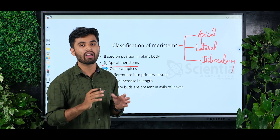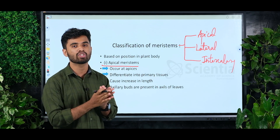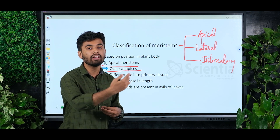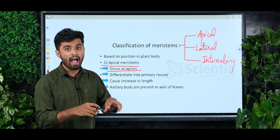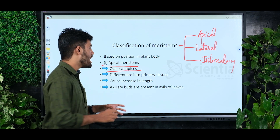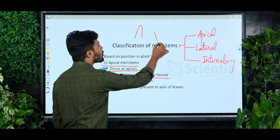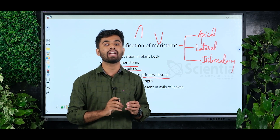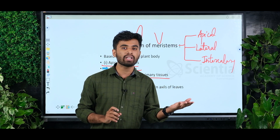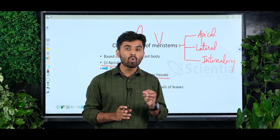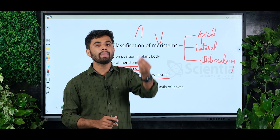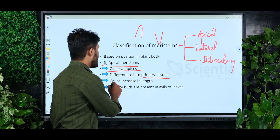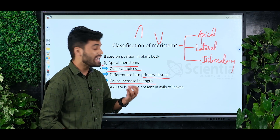What do we say about apical meristem? Apical meristem occurs at the apex. These are called primary tissues. Apical meristem is found at the tip of the stem and root. We use root apical meristem. It causes increase in root length, stem length, and shoot length. This is the apical meristem — they cause increase in length.